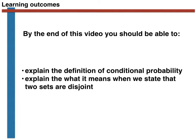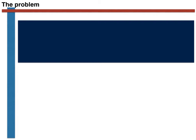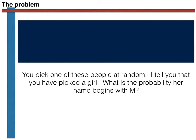Before we go on to that, let's introduce a simple problem. Much as in the video on the classical interpretation of probability, we are playing blind man's bluff with our six friends. You thus stumble blindfolded towards these six people and pick one at random. This time, once you have selected, I tell you that you have definitely selected a girl. Given this knowledge, what is the conditional probability that the person you selected has a name that begins with an M?